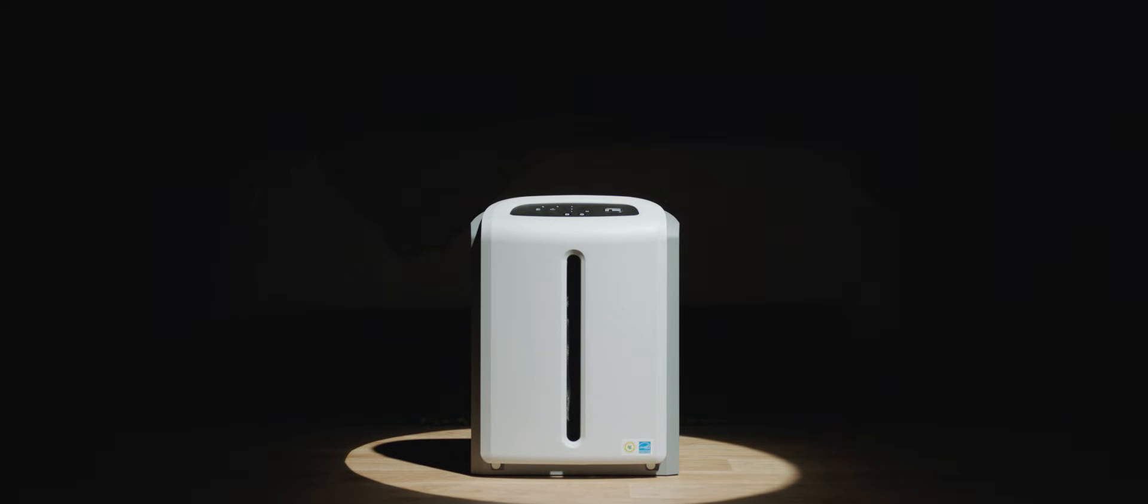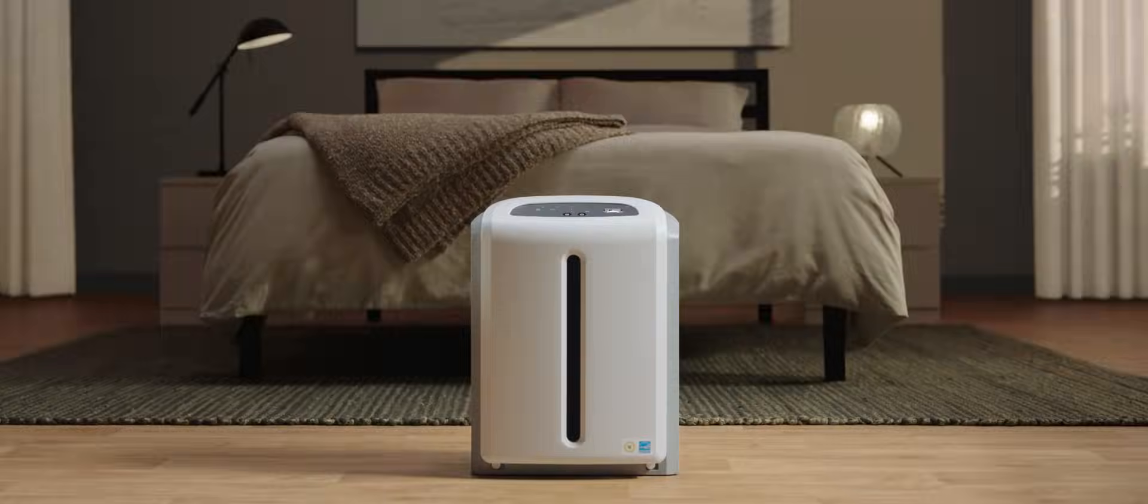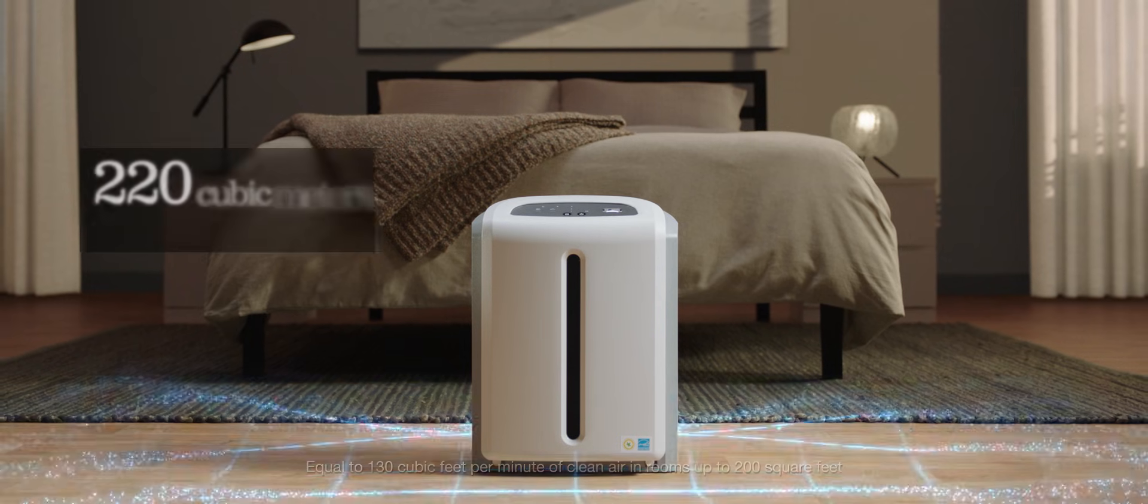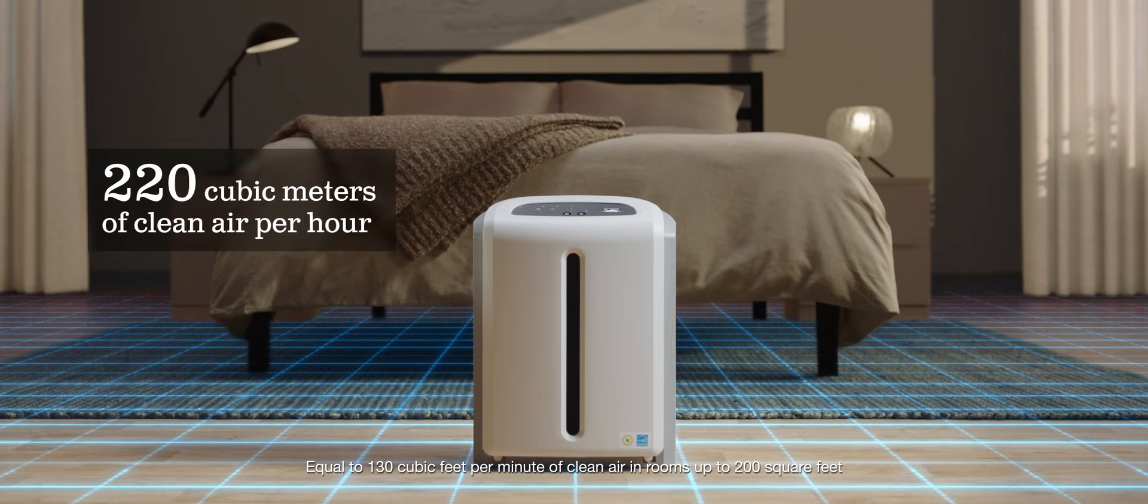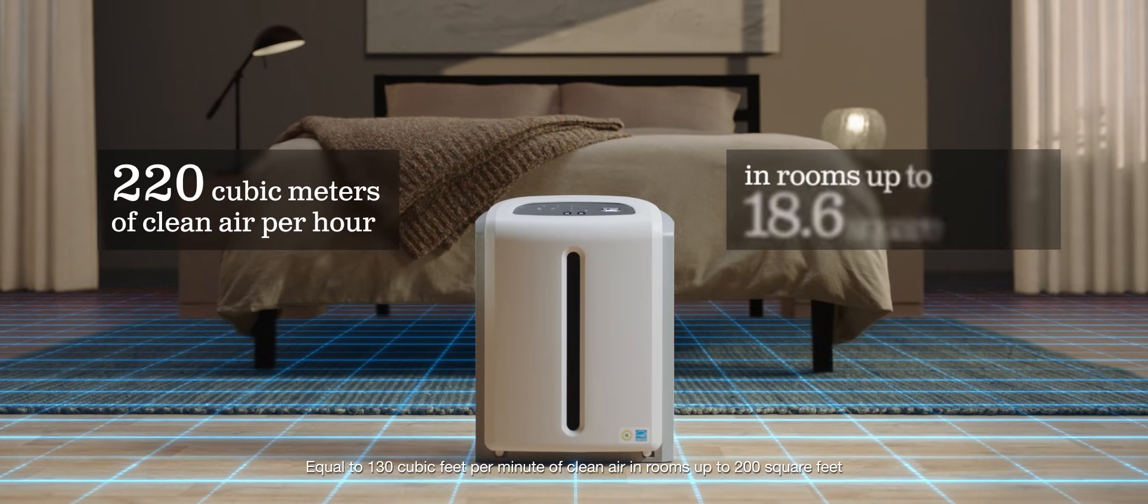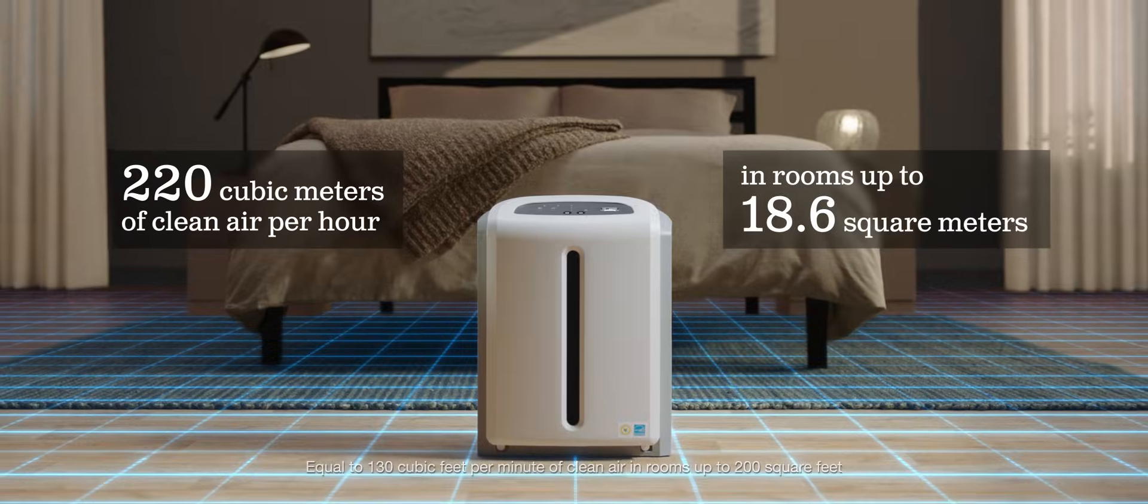This is the Atmosphere Mini Air Treatment System for smaller spaces like apartments, providing 220 cubic meters of clean air per hour in rooms up to 18.6 square meters.